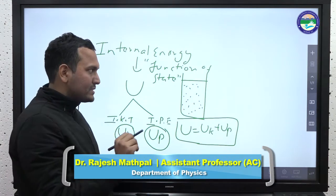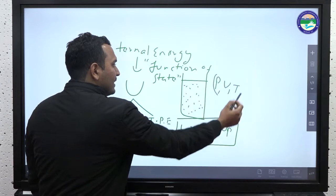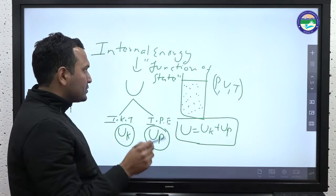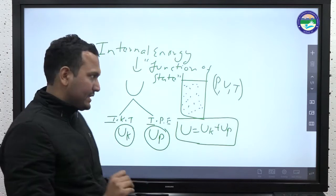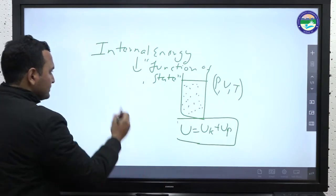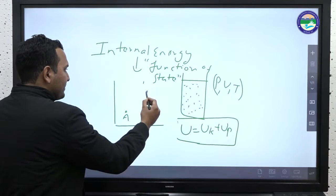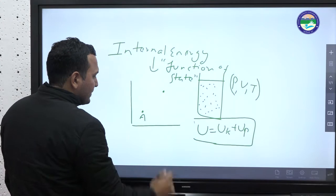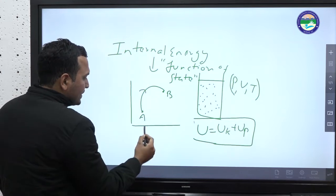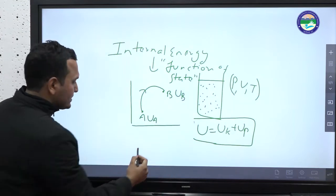If these thermodynamic coordinates change — for example, if someone has a PV diagram — we are going from state A to state B. When our state changes, if the internal energy at state A is UA and at state B is UB, then the change in internal energy is dU = UB − UA.